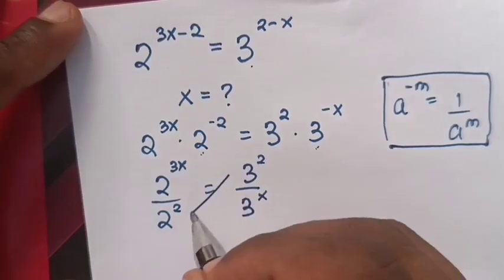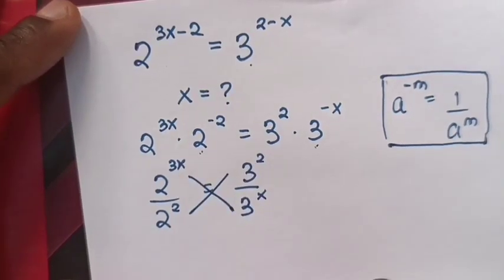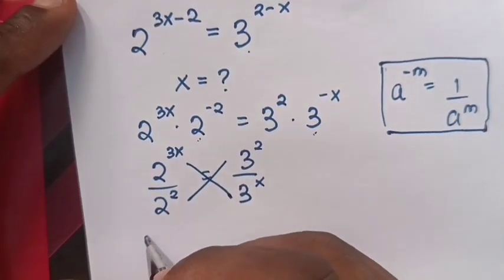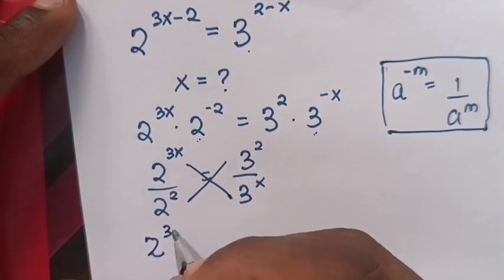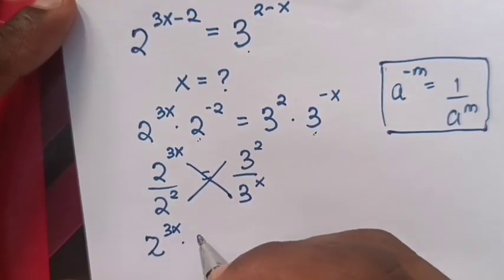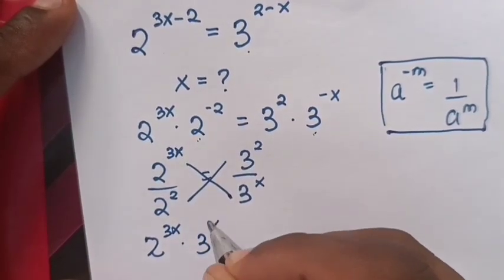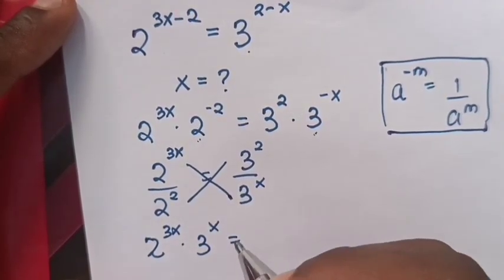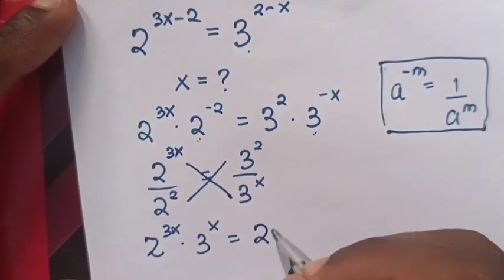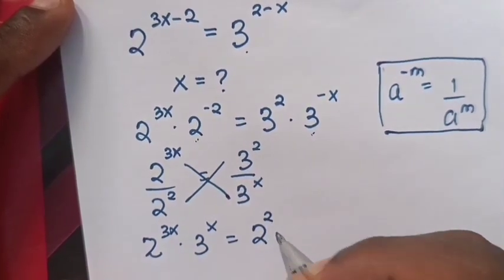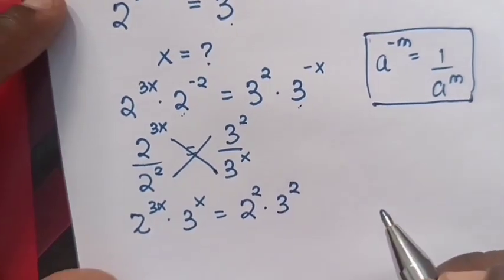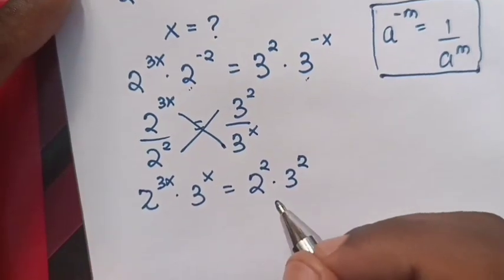Then we will cross multiply. So 2 power 3x times 3 power x is equals to 2 power 2 times 3 power 2.